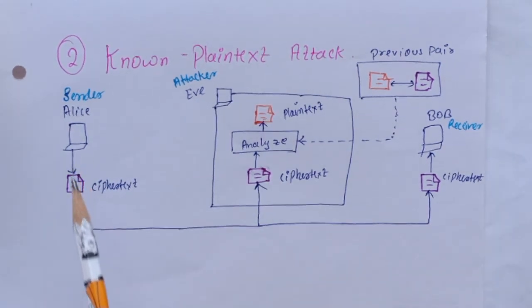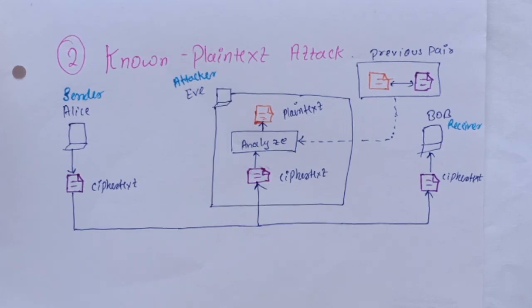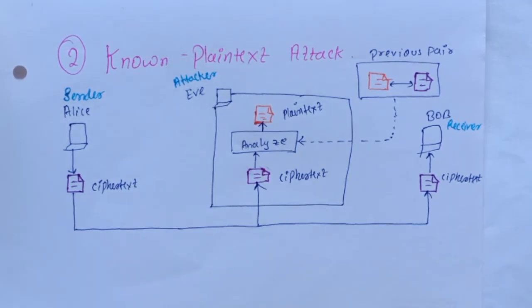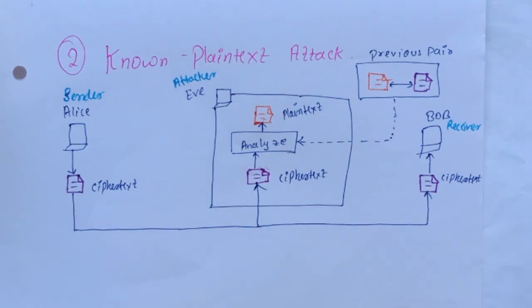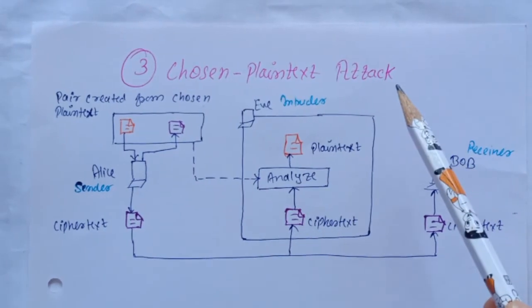Assuming Alice has not changed her key, Eve uses the relationship between previous pairs to analyze the current ciphertext. But this is very less likely to happen because Alice may have changed her key or may have not disclosed her previous messages.